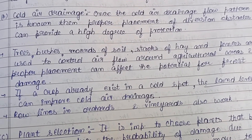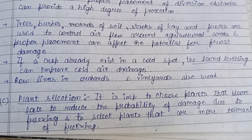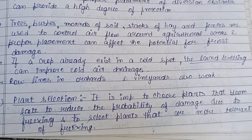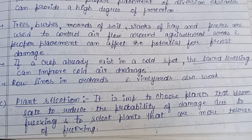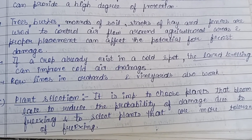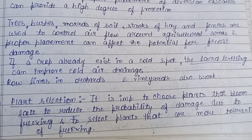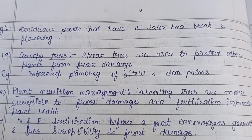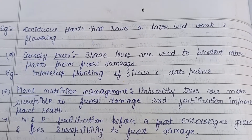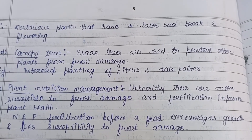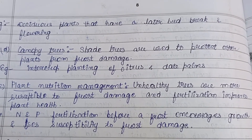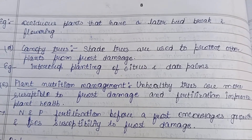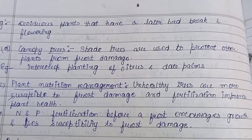Plant selection is important: choose plants that bloom late to reduce the probability of freezing damage, and select plants that are more tolerant of freezing. Deciduous plants with later bud break and flowering should be utilized. Canopy trees, or shade trees, are also used to protect lower plants from frost damage — for example, intercrop planting of citrus and date palms, where date palms protect the citrus from frost.